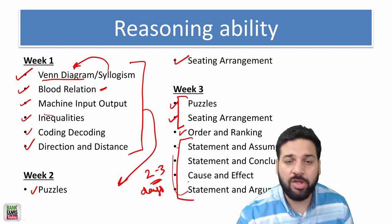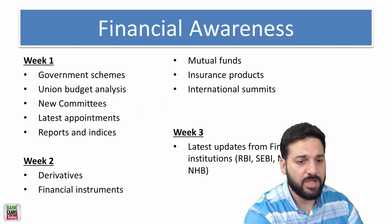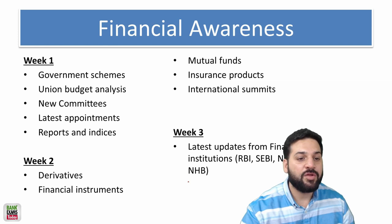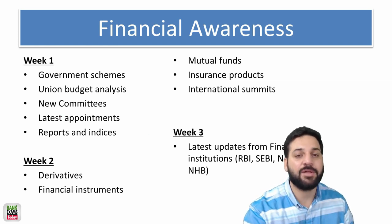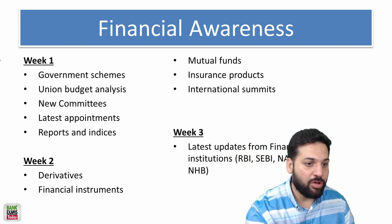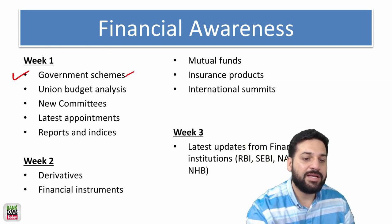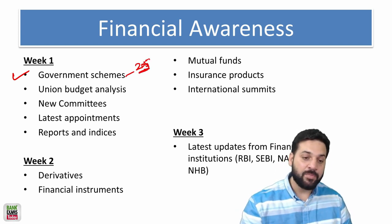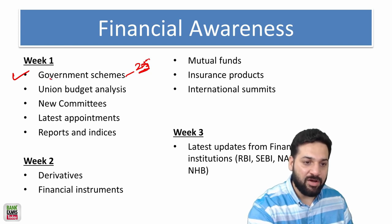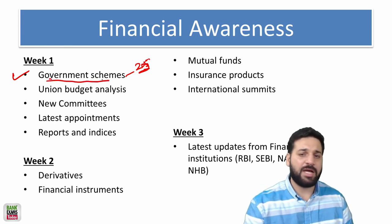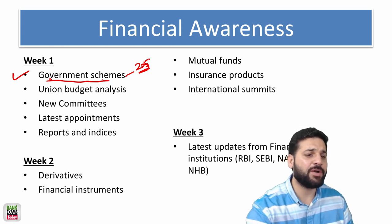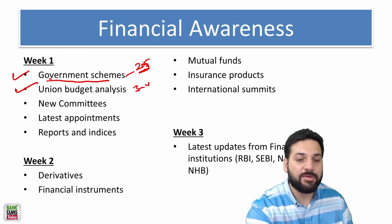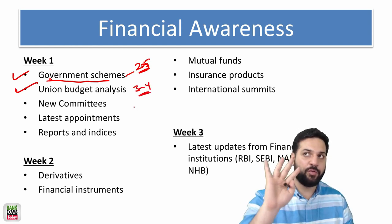Then in the financial awareness section, I have divided it into three parts. The first one, the latest updates except the updates from RBI, SEBI and NABARD. All the government schemes, the latest. I have made a list of latest 205 government schemes, just go through it, really important. What you need to learn: the purpose of government scheme, which ministry launched it, and latest updates related to that particular scheme. The union budget is also really important. You are going to find at least two, three to four questions from union budget only. I've already done four, I think five videos from union budget on this channel.